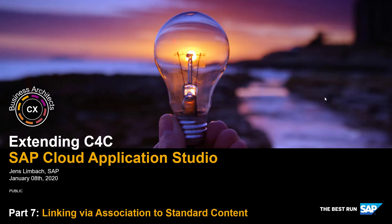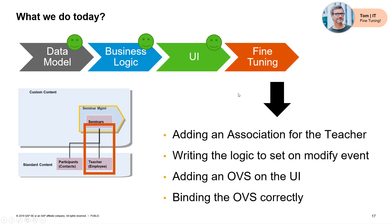In part 7 we're going to do a very important session about associations. Associations allow us to link to other business objects and to standard content. We want to use our seminar example to explain that. A seminar is done by a teacher, and a teacher is an employee in our standard CRM system. So we really want to be able to link a teacher to the seminars — until now we just had a blank field there.